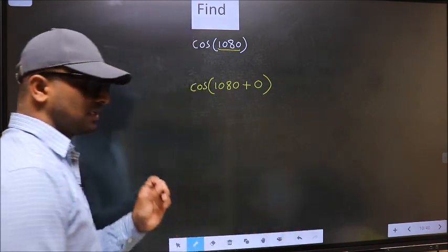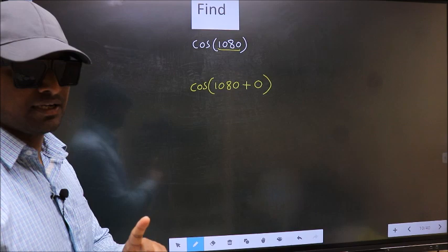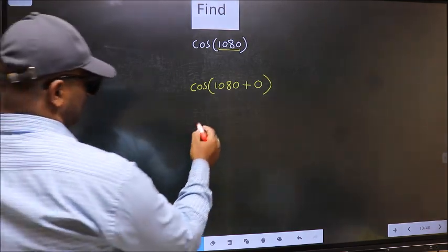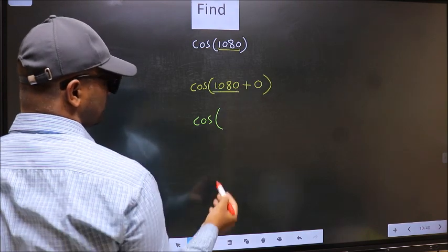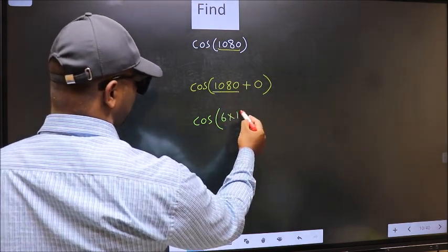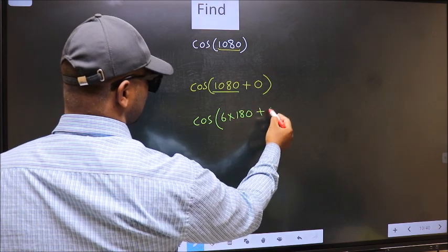This is your step 1. Next, cos in place of this, now we should write 6 into 180 plus 0.